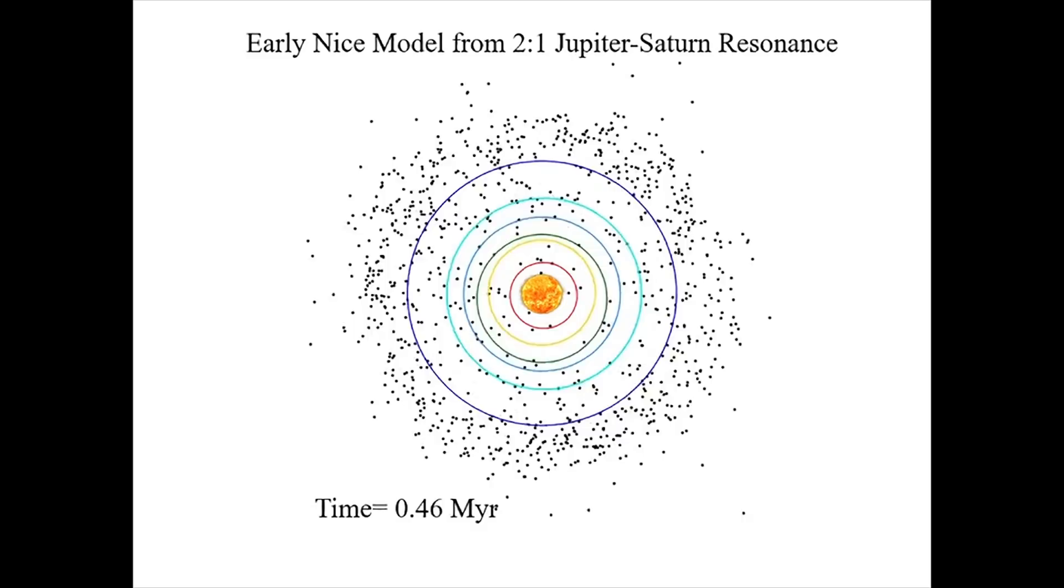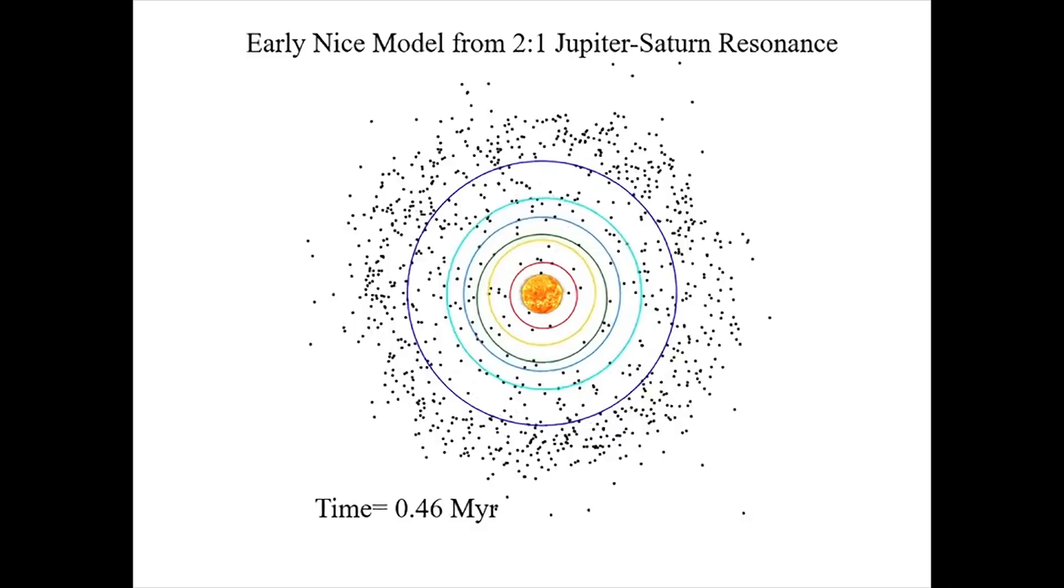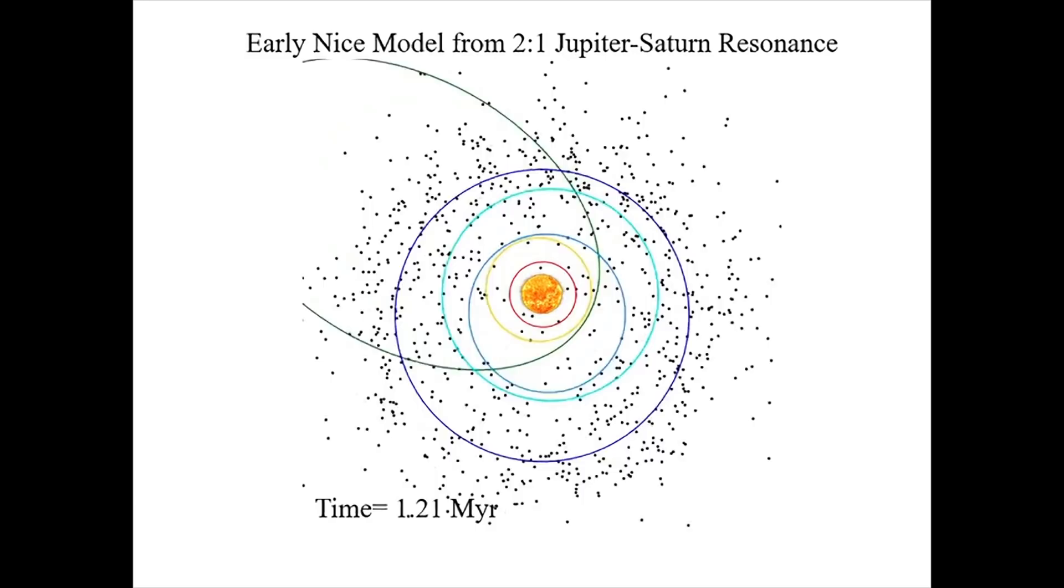Well, we think Planet 9 got to its present-day orbit because it formed in the same part of the solar system as the other giant planets and was later kicked out by Jupiter. HD 106906b might have formed even closer to its star, about 3 AU or so.